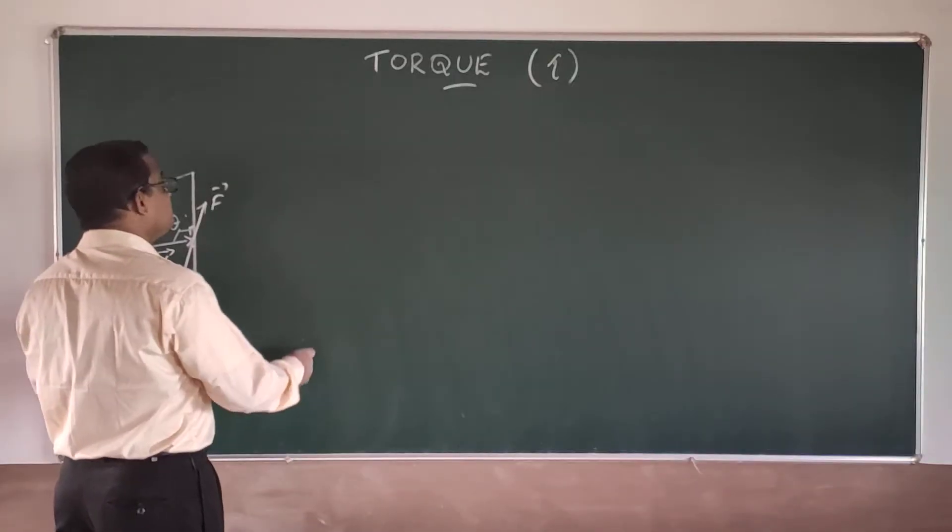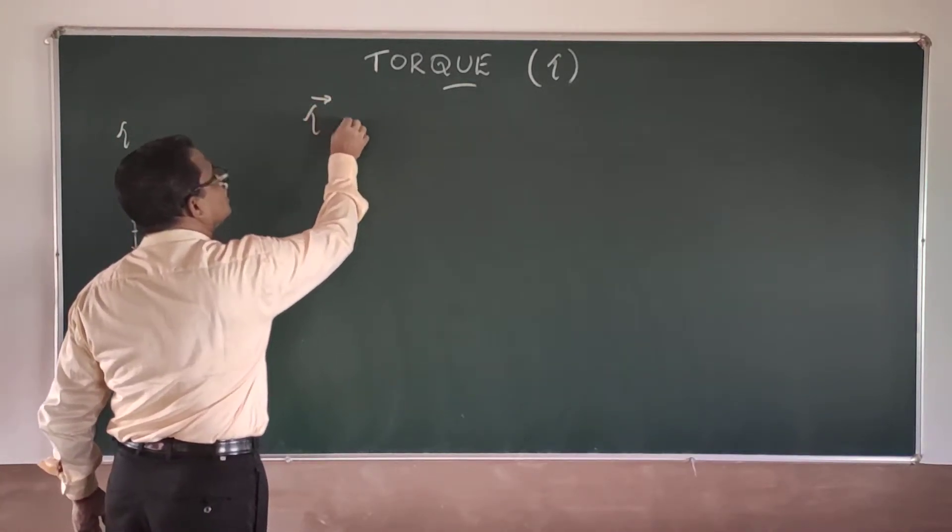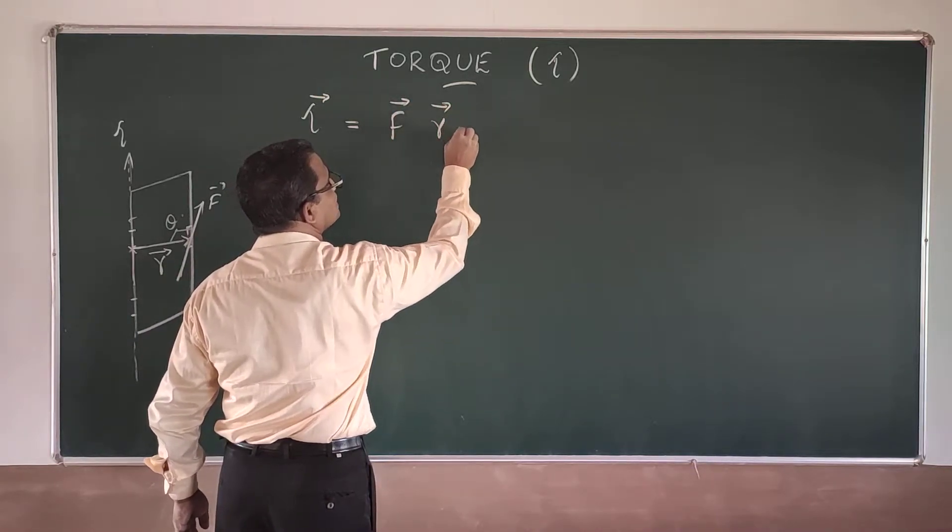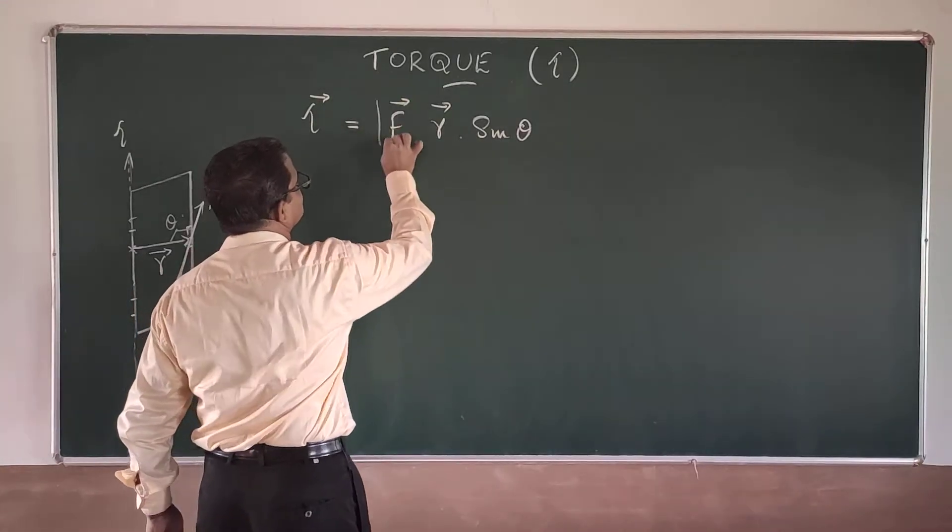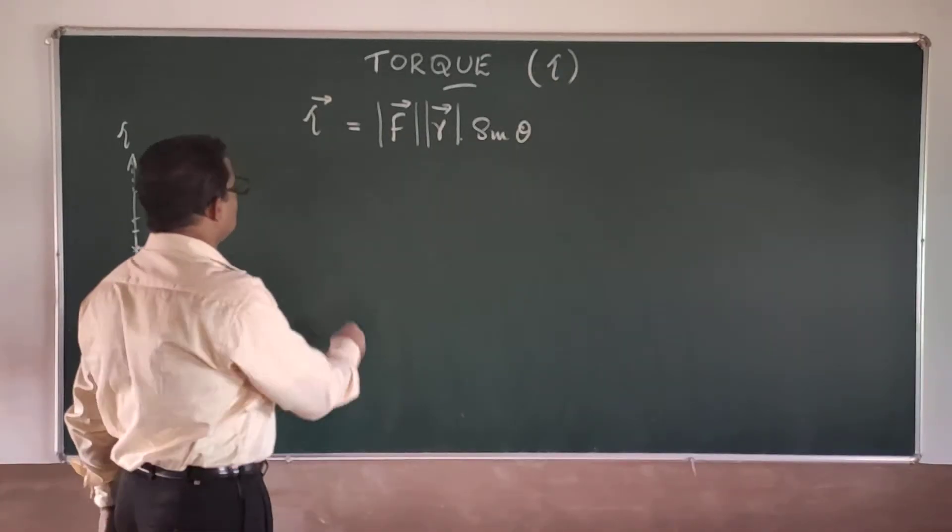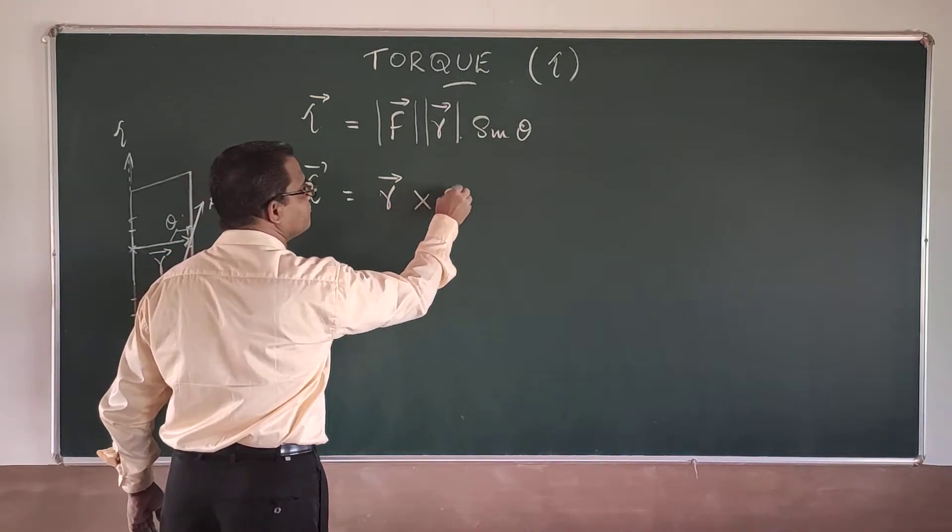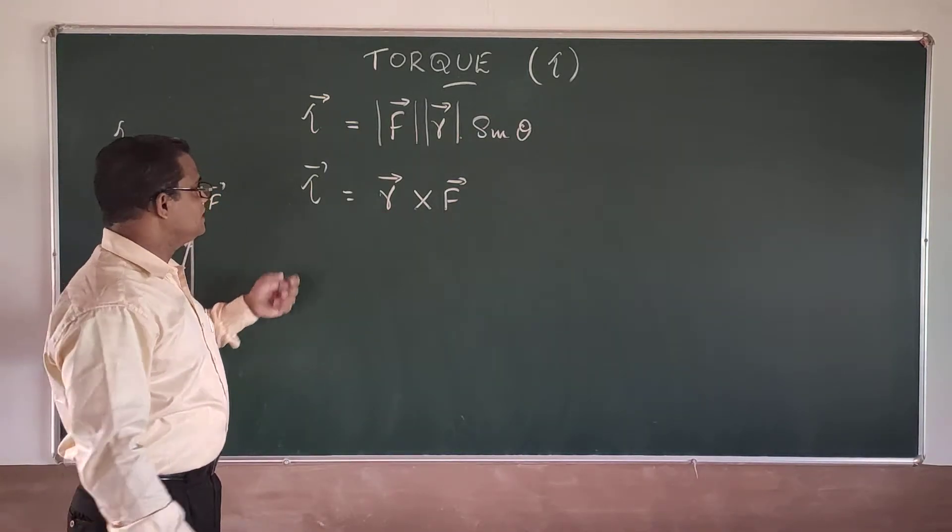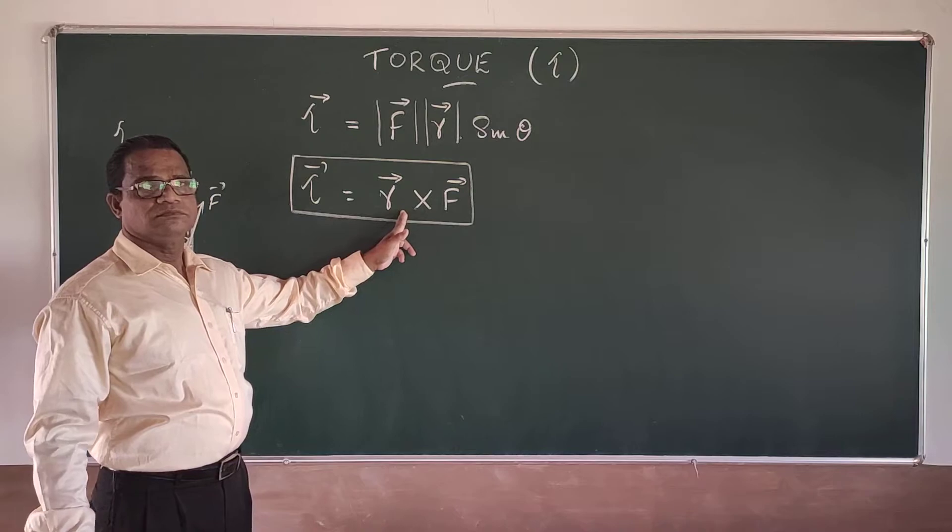So you can have the effect of torque that is acting here. Torque is equal to F, that is the force applied, into R, into sin of the angle theta. Magnitude of F, magnitude of R, and sin of the angle between the two vectors you can see. Or torque will be written as R cross F. So rotating effect of force is obtained like this, and remember it must be R cross F.